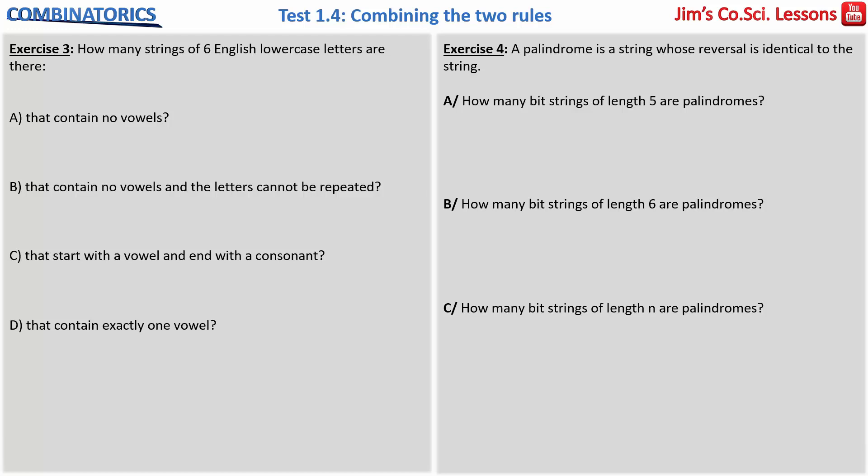Our third exercise: how many strings of six English lowercase letters are there? We know that there are 26 letters in total, and five of them are vowels and 21 of them are consonants.